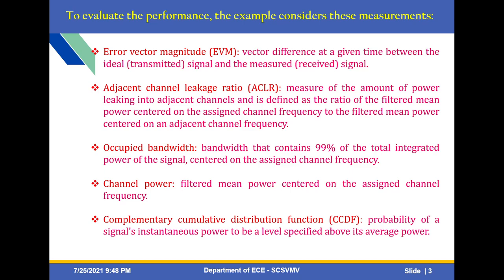The occupied bandwidth is the bandwidth that contains 99% of the total integrated power of the signal centered on the assigned channel frequency. The channel power is the filtered mean power centered on the assigned channel frequency. The complementary cumulative distribution function, CCDF, is the probability of signal instantaneous power being above a specified level relative to its average power. These measurements can all be performed using this example.